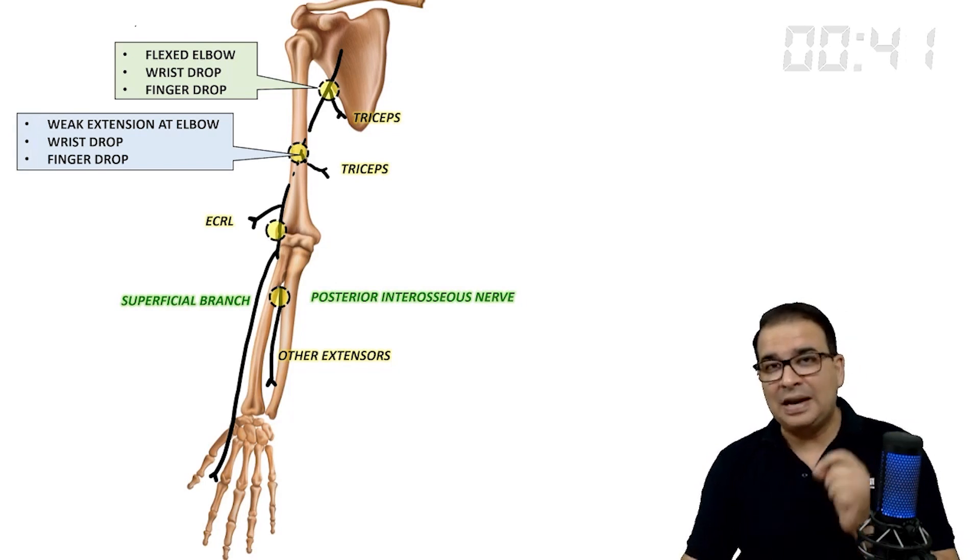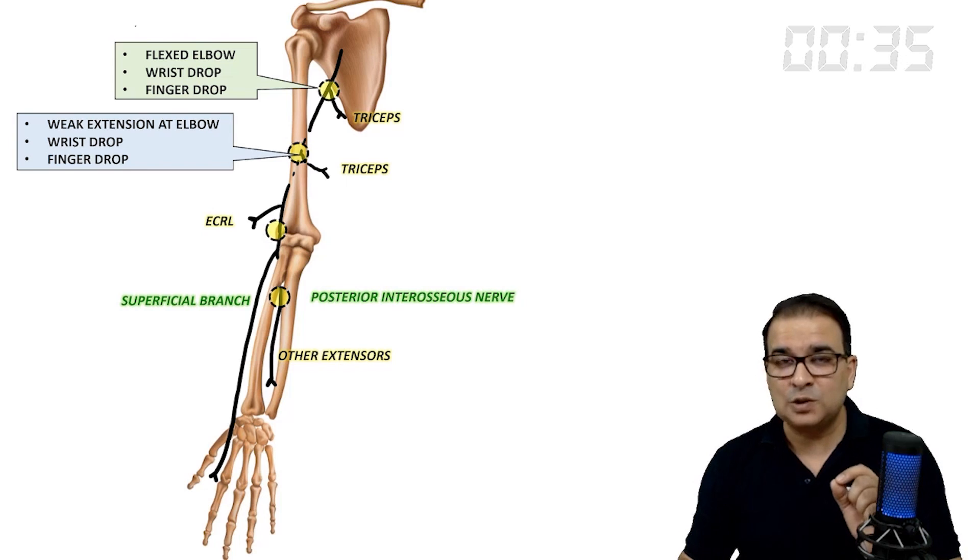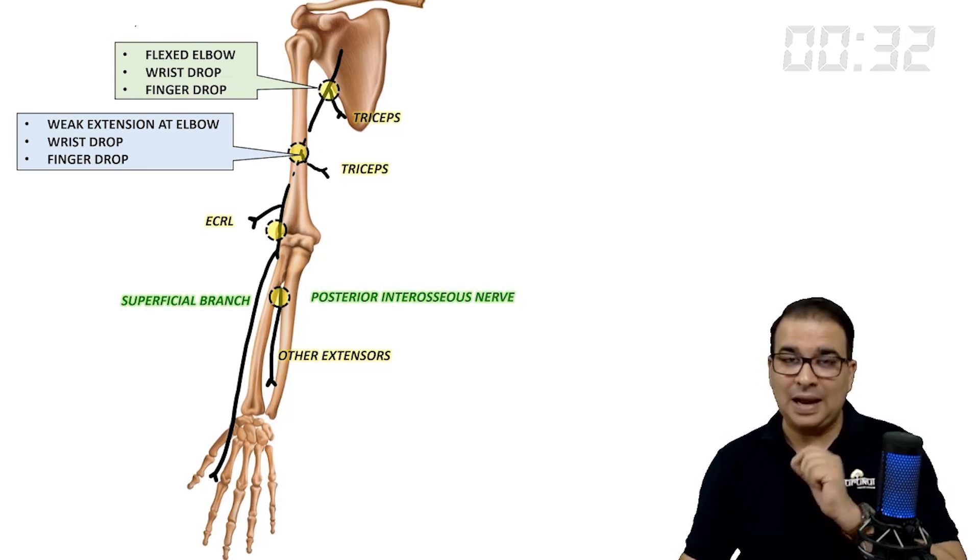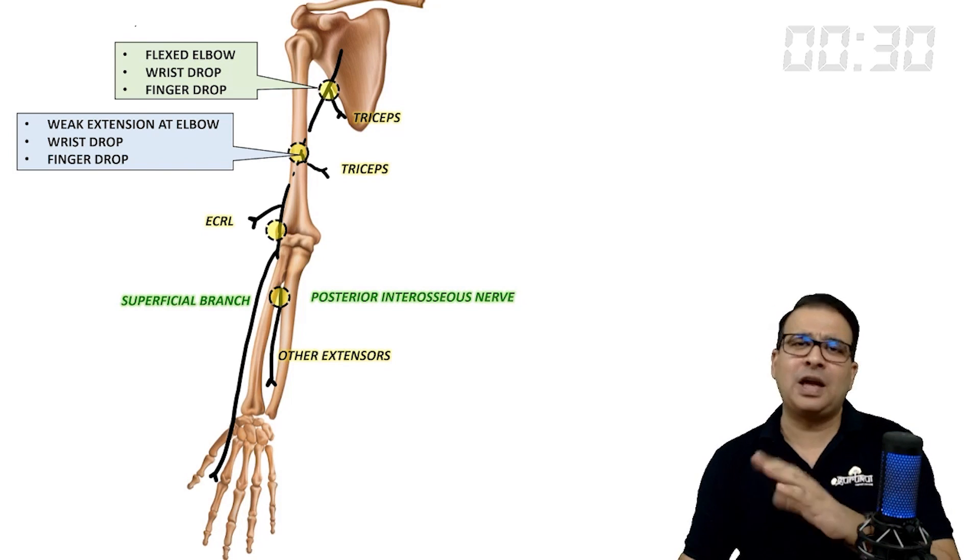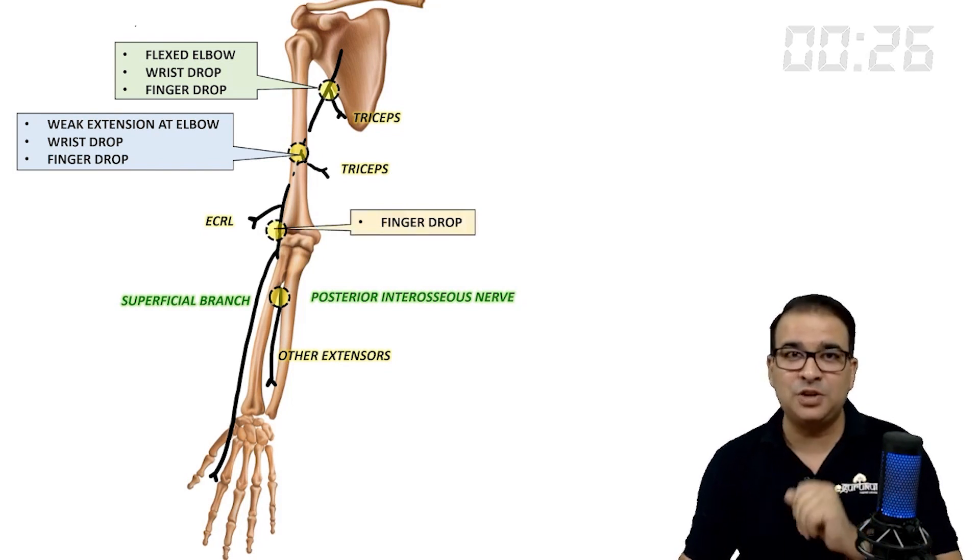If the nerve is injured in front of the lateral epicondyle, this time tricep is completely spared and ECRL is also spared. So there is no elbow flexion and there is no wrist drop, or you can say there is a weakness in the wrist extension here. So finger drop is the main feature to be seen here.